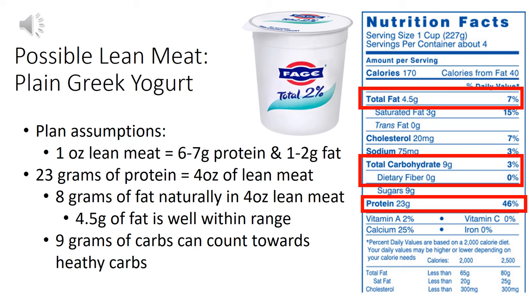Another protein option: plain Greek yogurt. We want to use this as our protein. One ounce of lean meat is six to seven grams of protein and one to two grams of fat, so the yogurt does not have to be fat free. You can go for the two percent variety because there's naturally going to be a little bit of fat in lean proteins. This particular brand has 23 grams of protein per serving — basically four ounces of lean meat — so you could have up to eight grams of fat. This brand only has 4.5 grams of fat per serving, well within range to be considered a lean protein.